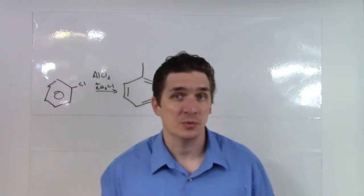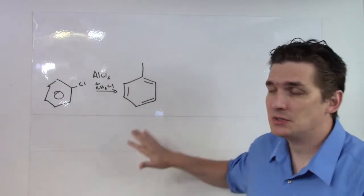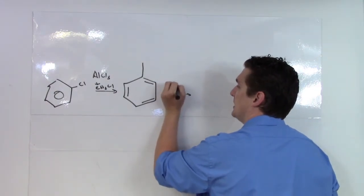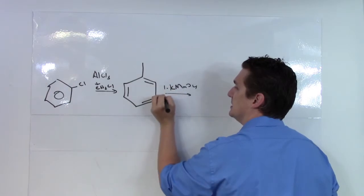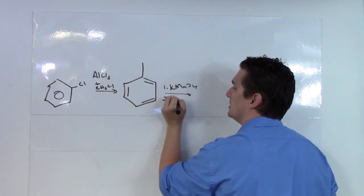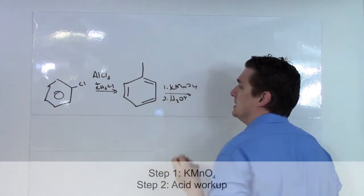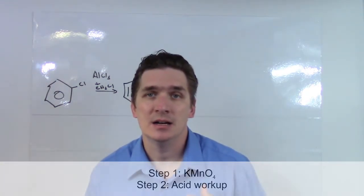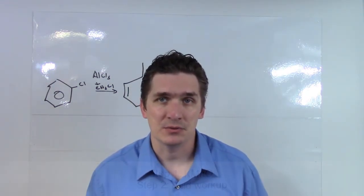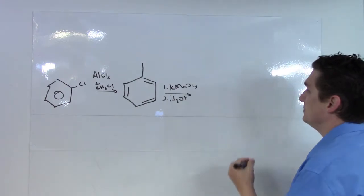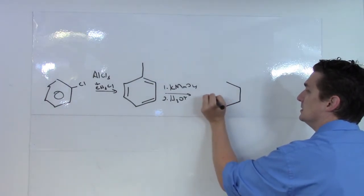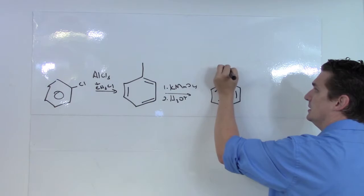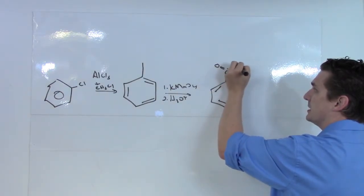We could make the toluene, but we prefer to go buy it. What we're going to do is take our toluene derivative and hit it with potassium permanganate first. The second step, we're going to acidify it with H3O+. Potassium permanganate here is going to be very good at oxidizing the methyl group, and what we're going to end up with when we finish is benzoic acid.